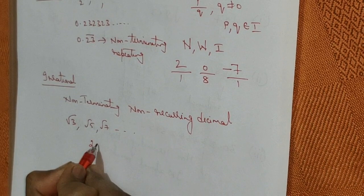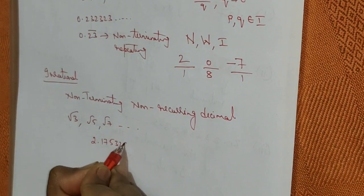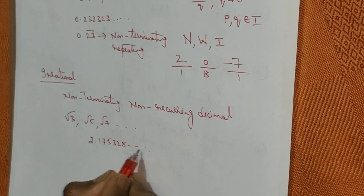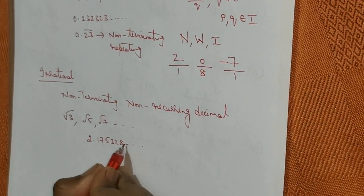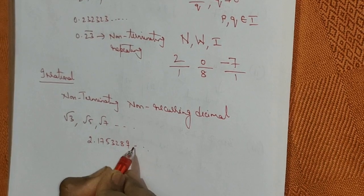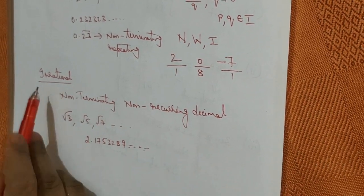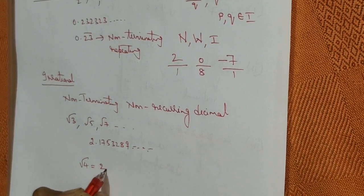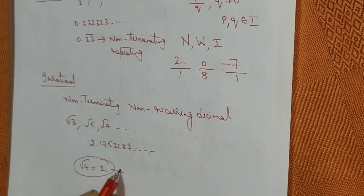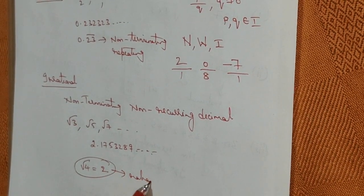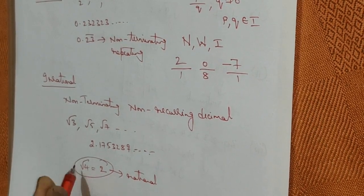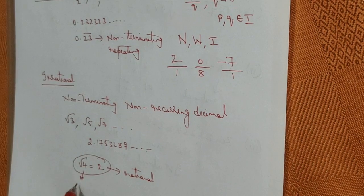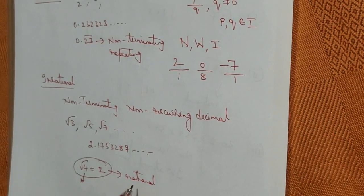I can also write 2.175328 and so on — it should not be terminating and it should not be repeating. I can write 9 followed by more digits; this is also an example of irrational numbers. Now if I take root 4, I can write it as 2, so this is not an irrational number — it is a rational number. So the square roots of non-perfect squares are all irrational. Here 4 is a perfect square, so root 4 is not irrational.